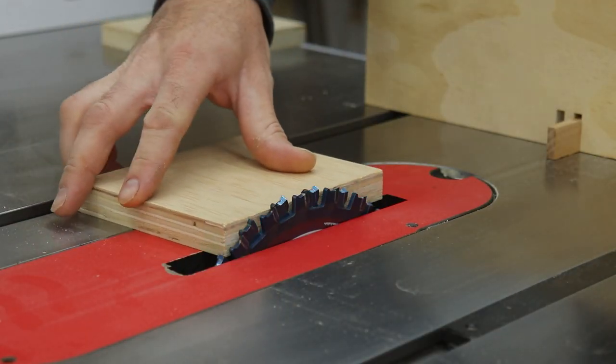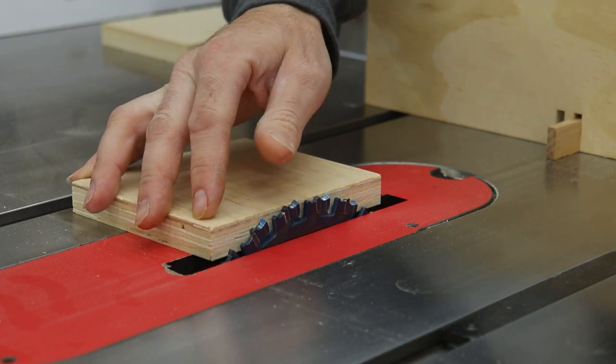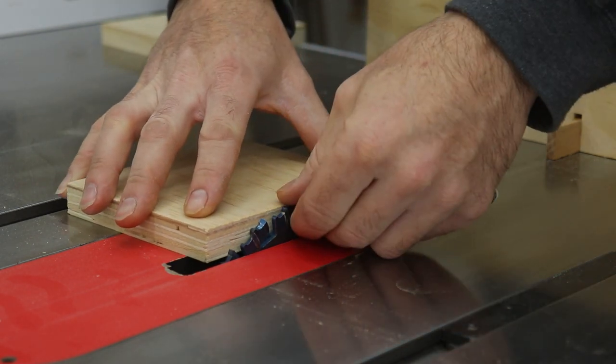Then set the table saw blade height to just a bit higher than the thickness of your material. That will allow the fingers to stick out past the edge enough so you can sand them back flush once it's all together.